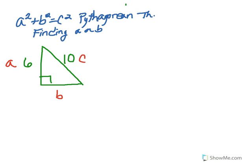We labeled 6 as A, the missing side as B, and 10 as C. 10, being the side opposite the 90 degrees, is the hypotenuse.